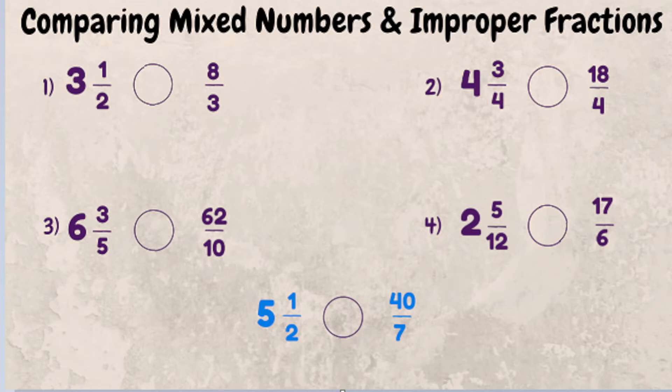So what we're going to do when you compare them is convert them to the same format. Let's look at these four examples here. The first two we're going to convert to an improper fraction, and the second two we're going to convert to a mixed number.